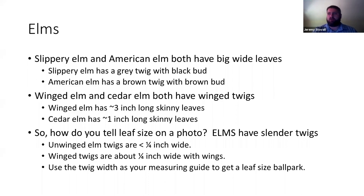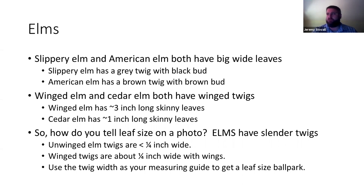The bark is similar on these two species, the leaves are similar, the fruits are similar. The twigs are going to be your biggest difference other than leaf texture. You can chew the twigs live on the tree and get that snotty texture on slippery elm, but you can't do that on a picture. So look at the twigs: slippery elm is going to have really gray twigs with a black bud, whereas American elm is going to have a brown or tan twig with a brown or tan bud.